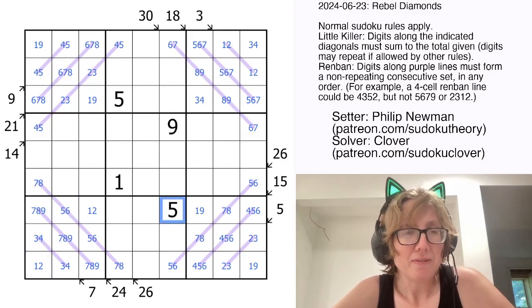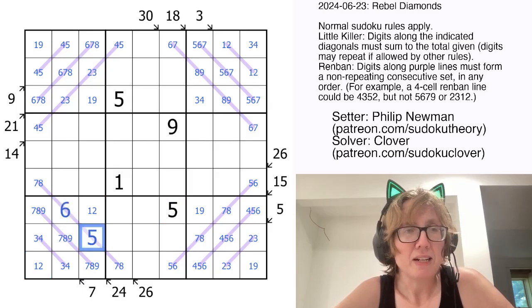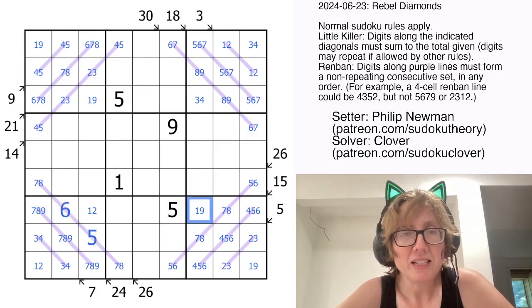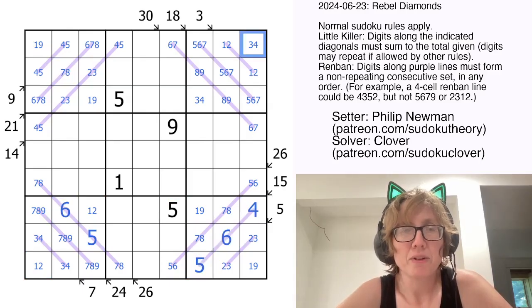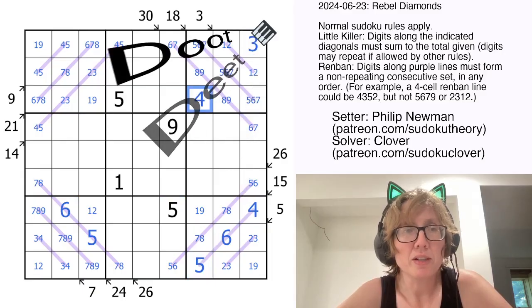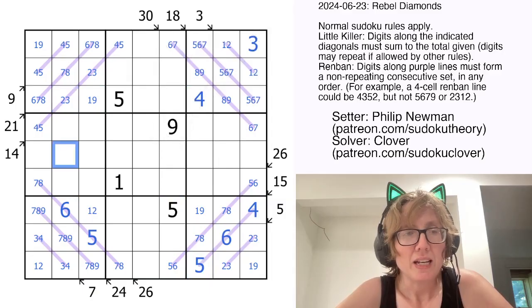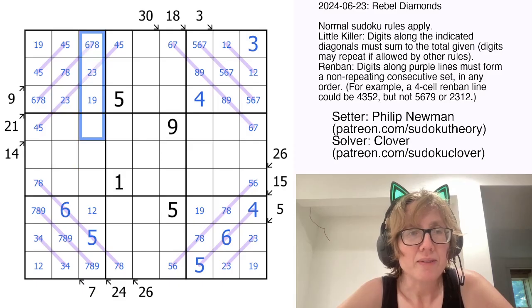So we have a 5 here. That makes this a 6 and a 5 and eliminates 6 from there, and eliminates 5 from here. There's a 5 and 6 in the row. So that's going to be a 4, 6, and 5. The 4 gives me a 3 and a 4. And I don't think I get anything else immediately out of that. So let's keep moving.